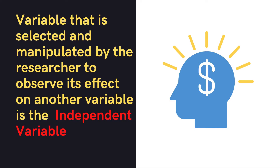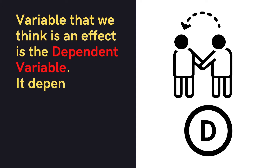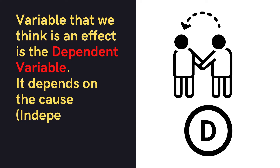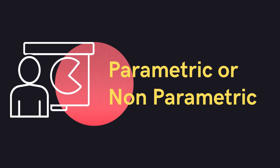The independent variable is the one which the researcher considers to be the cause. The researcher manipulates this independent variable to see its effect on another variable. The variable that we think is the effect is the dependent variable — it depends on the independent variable. Another decision to make is whether we go for parametric tests or non-parametric tests.